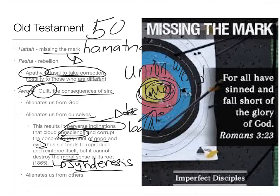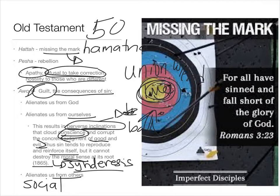And finally, sin alienates us from others. All sin is social — there isn't a single sin you can commit that isn't going to somehow impact someone else. A student once asked, 'What about someone who's cutting themselves and nobody else knows about it?' Well, the idea that no one else sees that something is wrong is mistaken. People in your life realize that something's off — that you seem sad, or that you're always covering up. We're social creatures, so there's no sin that is solitary. All of our sin will alienate us from others.